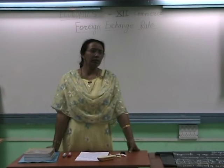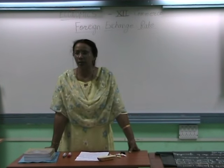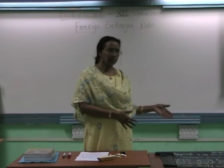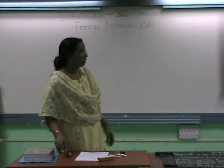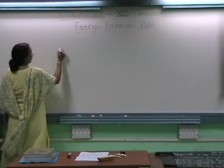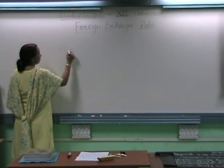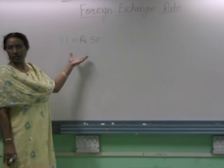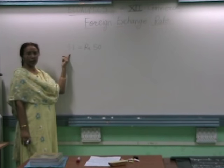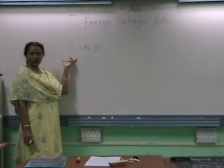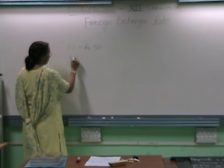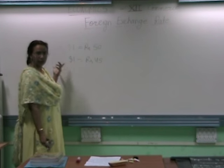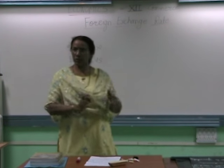For example, we can exchange the Indian rupee with dollars. We can exchange the pound with dollars. We can exchange the pound with Indian rupee. For example, if I write 1 dollar is equal to 50 rupees — that is the exchange rate. We can exchange 1 dollar with 50 rupees. With 45 rupees we can buy 1 dollar. So this is known as foreign exchange rate.